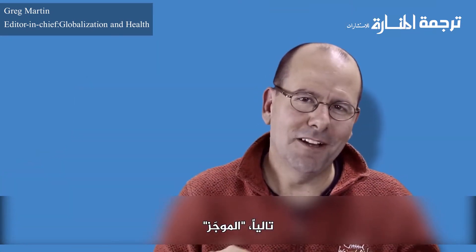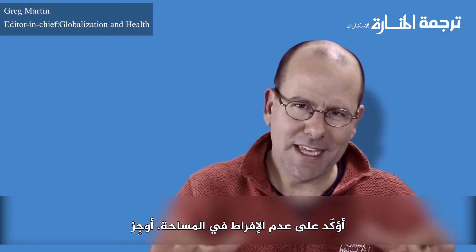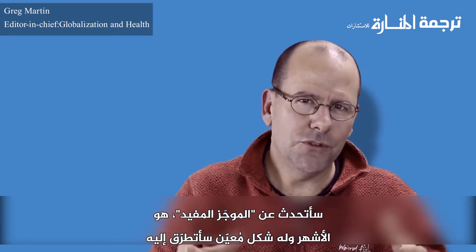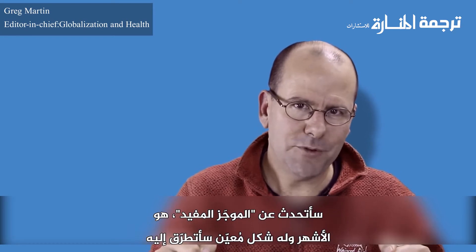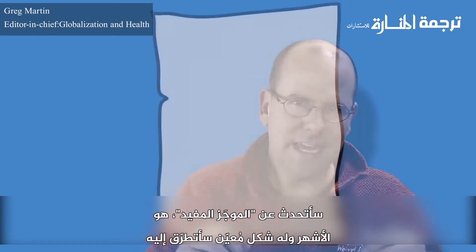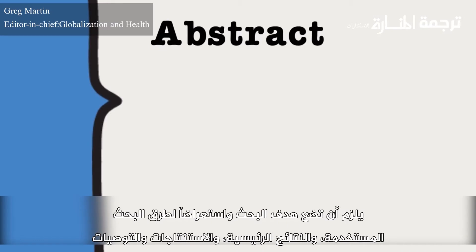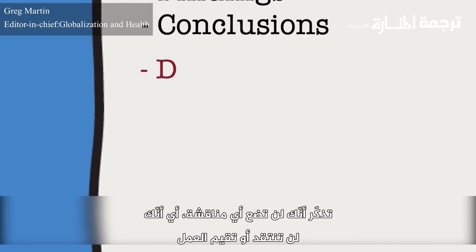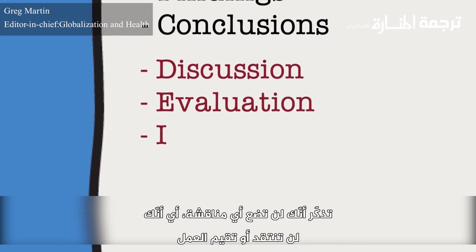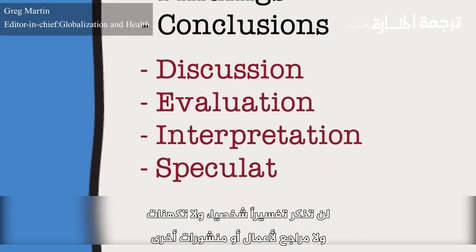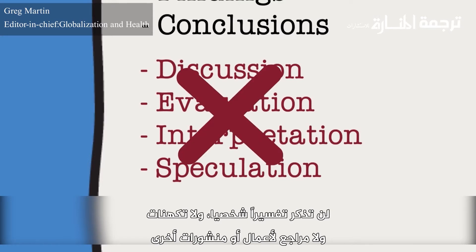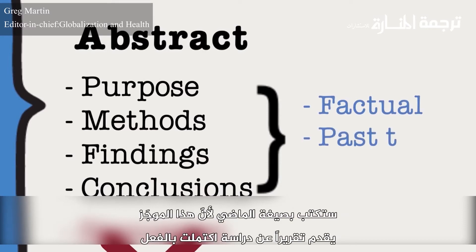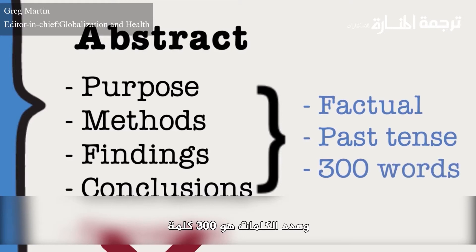Next, let's talk about the abstract. The abstract is usually about 300 words — again, not a lot of space, so you want to be concise. There are different types of abstracts; what I'm going to talk to you about is one called the informative abstract. That's the most common type and it follows a certain format. You're going to include the purpose of the paper, an overview of the methods, the main findings, the conclusions, and the recommendations. Importantly, you're not going to have any discussion — no critique or evaluation of the work, no subjective interpretation, no speculation, no references to other works or publications. Keep it nice and factual, written in the past tense because this is reporting on a study that's already been completed, and do the whole thing in about 300 words.